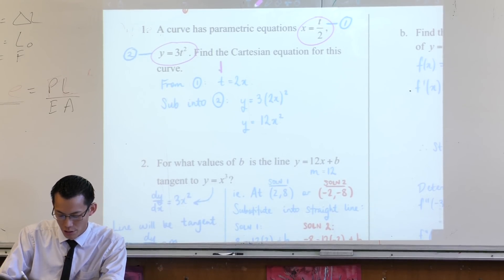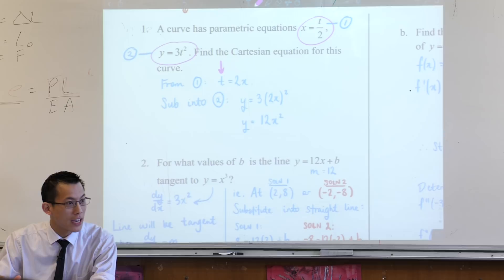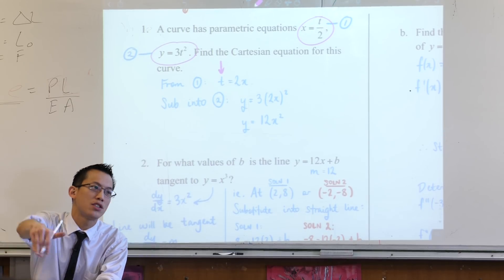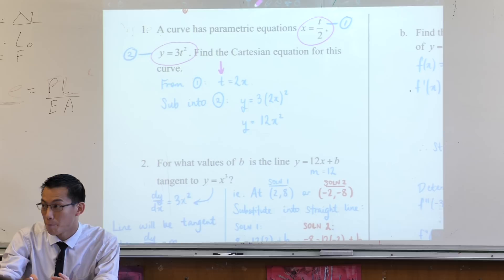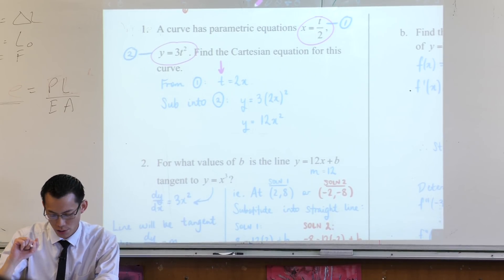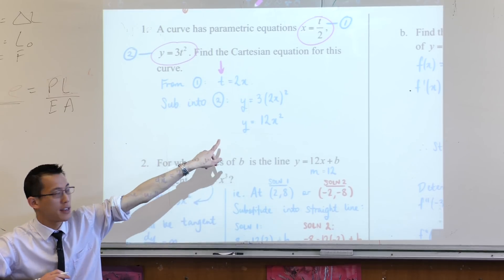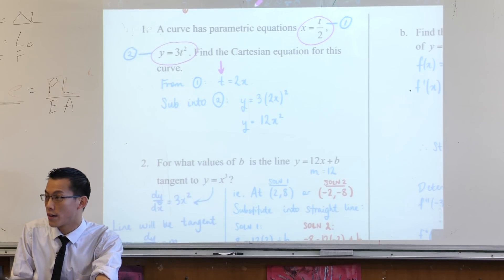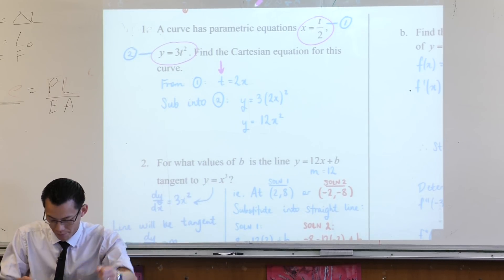That's why the very first thing that I do is make the parameter the subject of one of the equations so I can substitute it into the other, then the parameter is gone. You can see it's much easier to do that with equation 1 than equation 2, so that's why I rearrange and there is my substitution. So are you okay with y = 12x²? Thumbs up. Great.